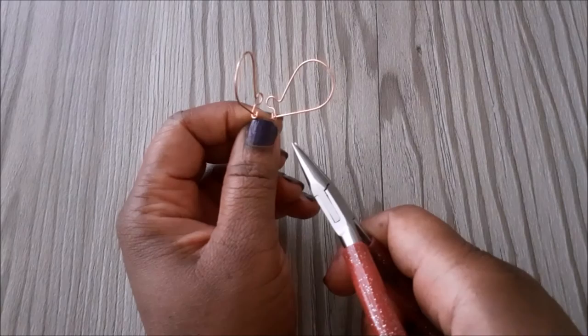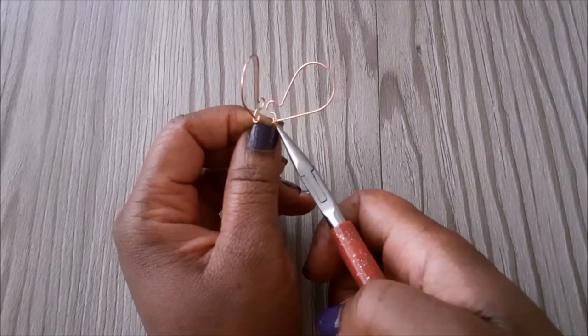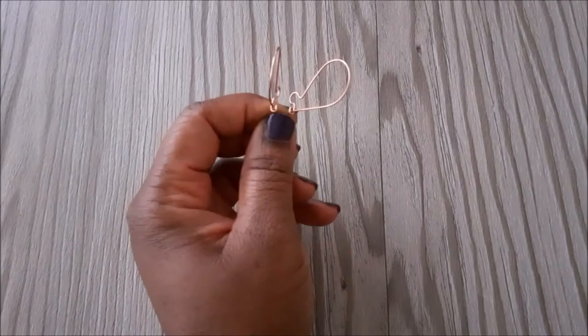So now if you look at the U shapes we made in the beginning, one is sitting on the left inside and the other is sitting on the inside right, and this is exactly what we want.